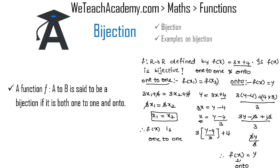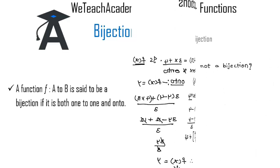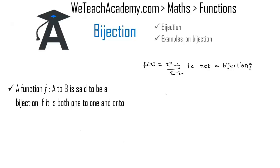So f(x) is an onto function. Therefore f(x) is bijective as it satisfies the conditions of both one-to-one and onto. Now let us consider another example: we have to prove that f(x) = (x² − 4) / (x − 2) is not a bijection.